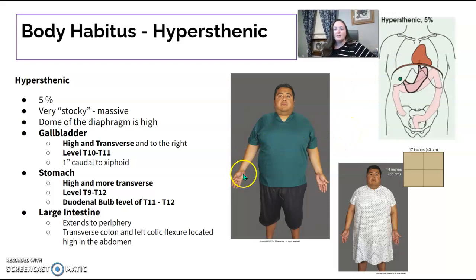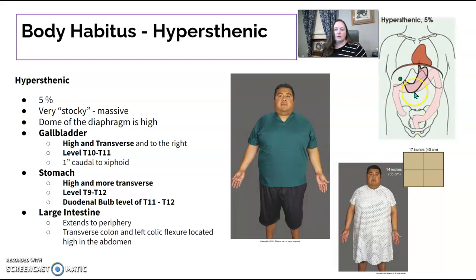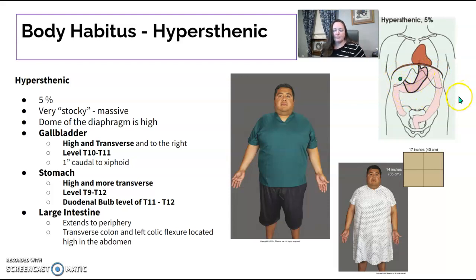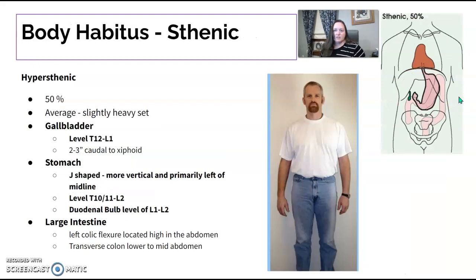Your hypersthenic patient is your big patient with a very large belly. This belly pushes everything up high and out to the sides — high and transverse. The gallbladder is pushed way up high and out to the side. The duodenal bulb is also very high, at the level of T11, T12. The large intestine is also pushed up, and the transverse colon is way up. So for your hypersthenic patient, everything is going to be pushed up and away.